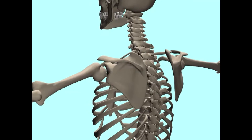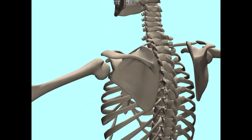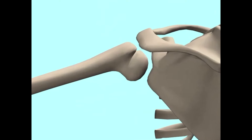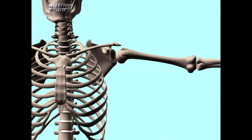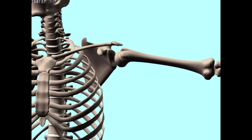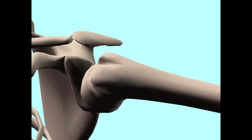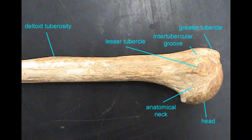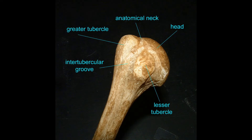Between the anatomical and surgical necks of the humerus are found the greater tubercle of the humerus, which can be seen from both the posterior and anterior views, and the lesser tubercle, which is only visible on the anterior view. Between the two tubercles is the intertubercular sulcus of the humerus.